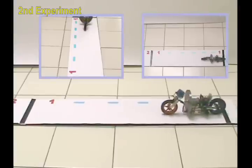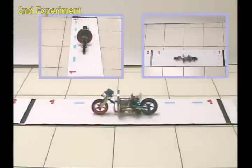The second experiment is forward motion. This shows how well the robot travels forward maintaining the stability.